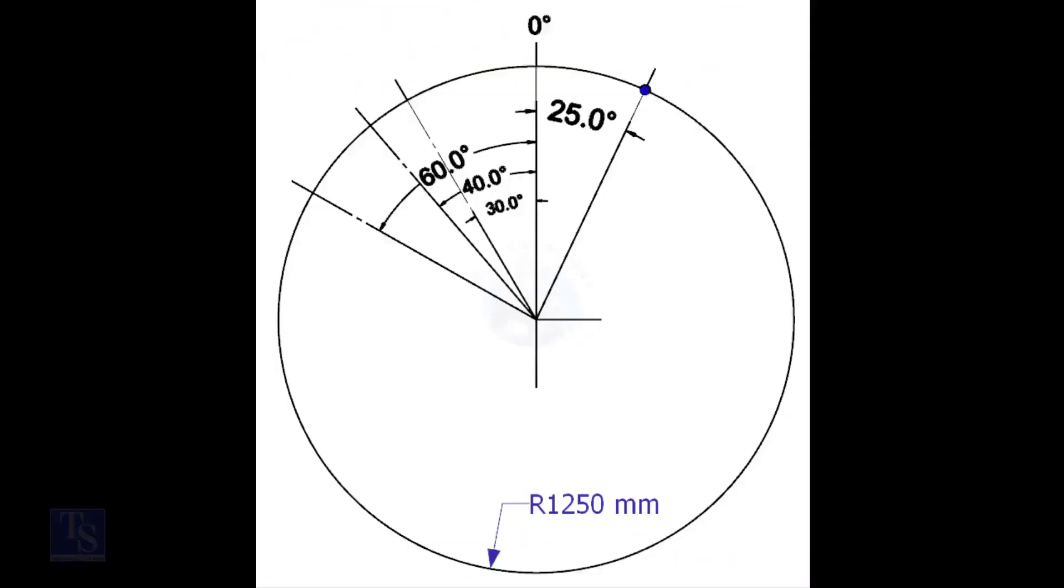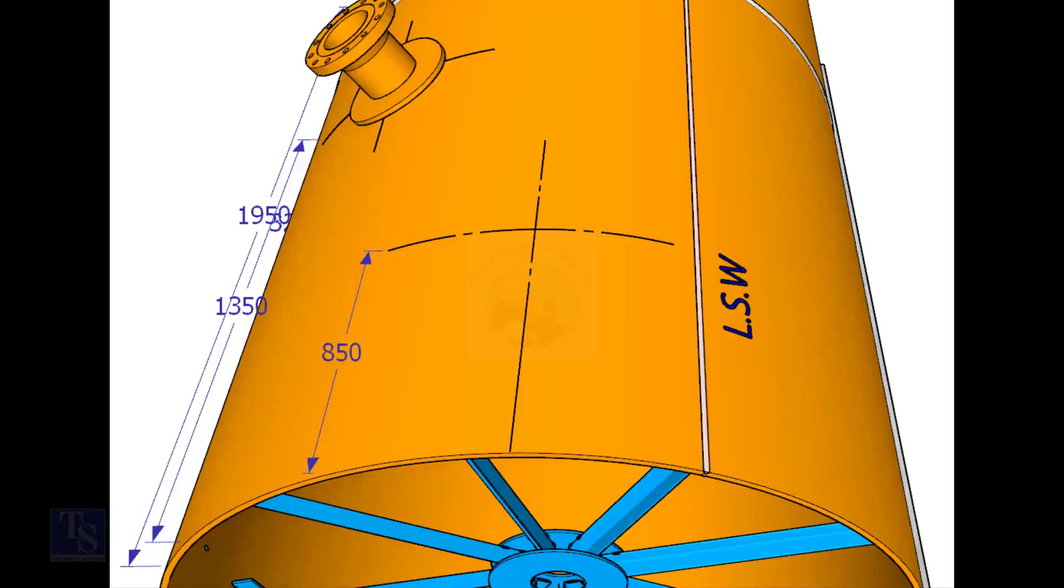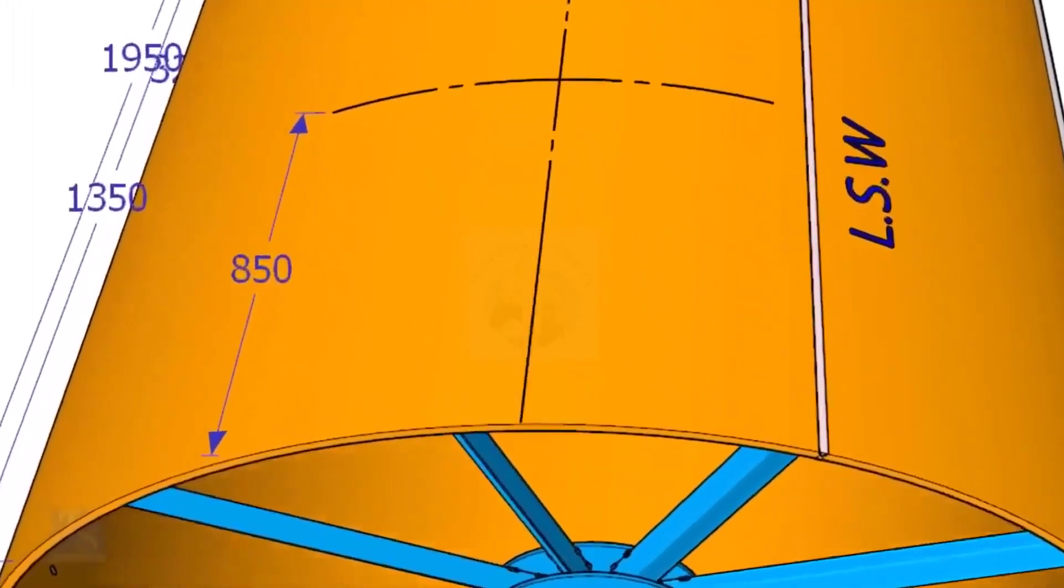Mark the zero degree line as per the drawing. Zero degree is rotated 25 degree anti-clockwise from the center of the weld joint. We have the included degree and the diameter of the tank. Let us calculate the arc length. Arc length for 25 degree is equal to outer diameter into 3.142 divided by 360 into 25 is equal to 545.5 millimeters. Mark this distance on the end of the shell.